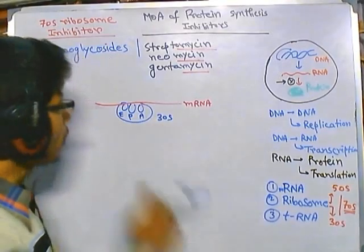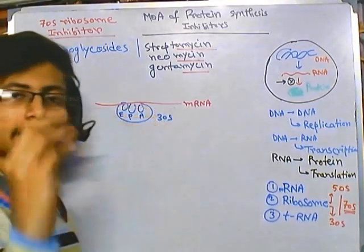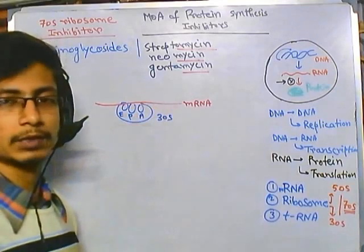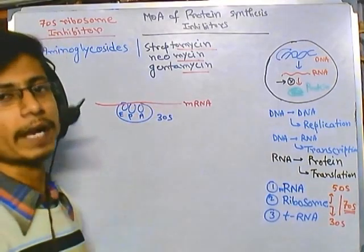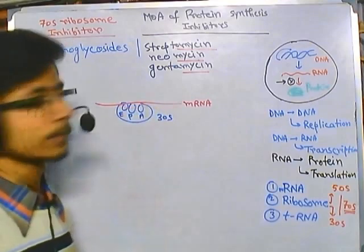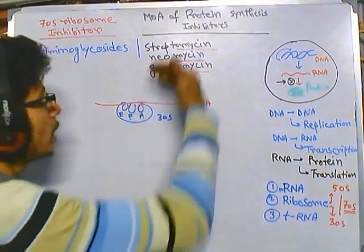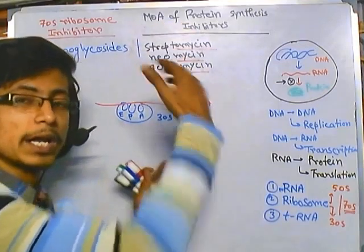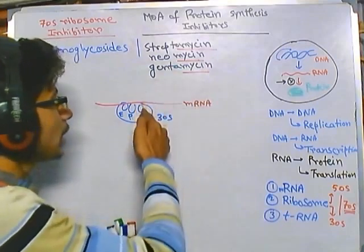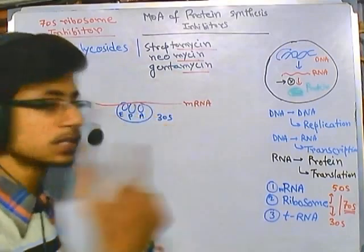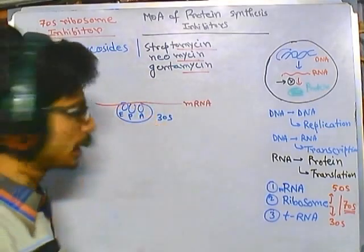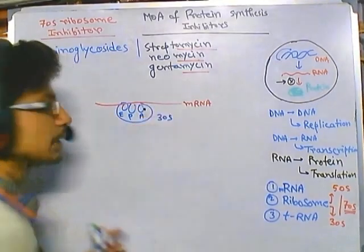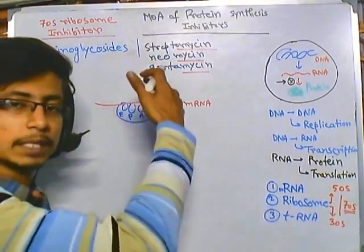The 30S subunit has three different sites: E, P, and A. At the A site, there is an important protein called the release factor that binds there. This release factor binding at the A site prevents the 50S subunit from randomly attaching to the 30S subunit.